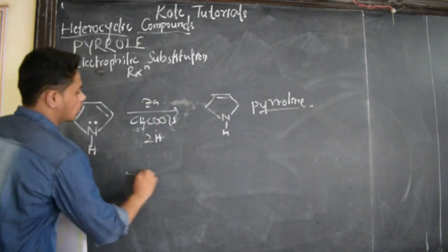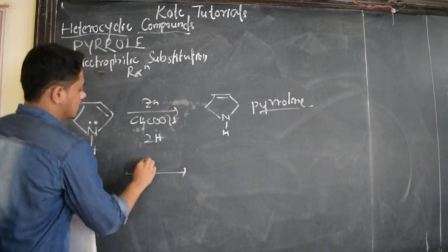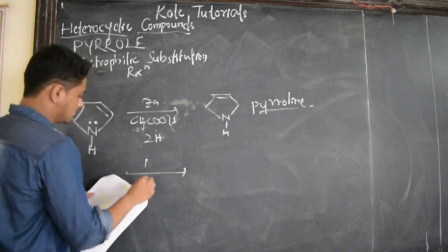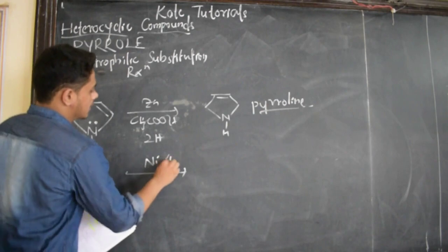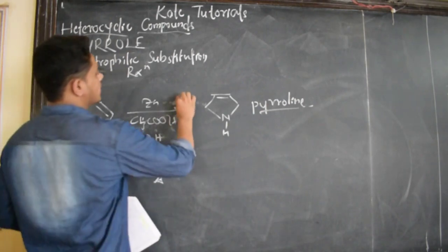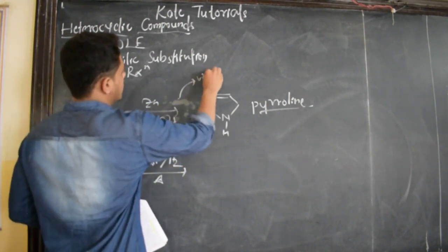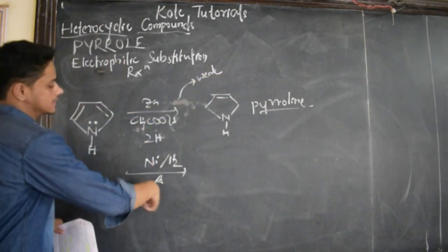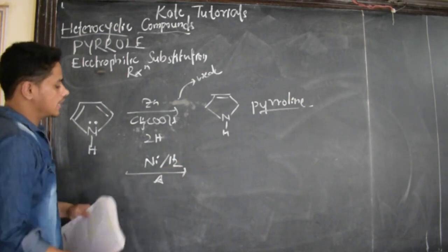The same pyrrolein when heated with nickel and hydrogen - this is a strong reducing agent, whereas this mixture of zinc and acetic acid is a weak reducing agent.